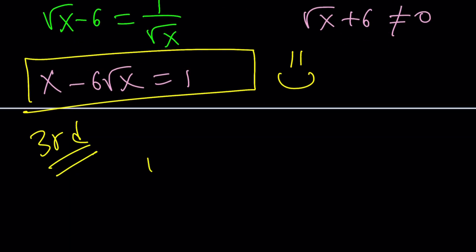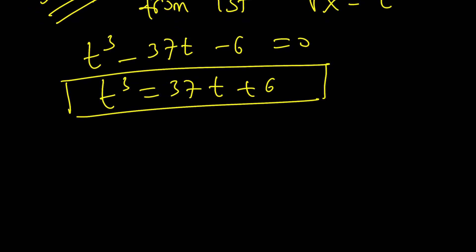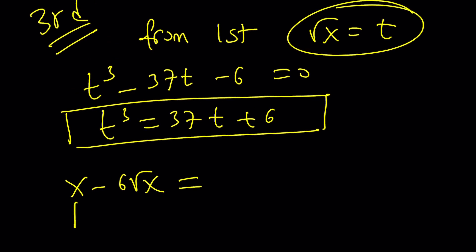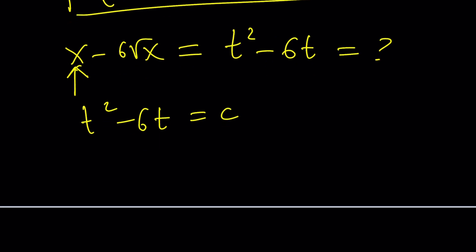Third method. So remember, from the first method, we got square root of x equals t, and that gave us t cubed minus 37t minus 6 equals 0. Now, here, I'm going to go ahead and isolate t cubed and write it as 37t plus 6, which is something that I'm going to use later. So let's save it. And now, remember, we're trying to evaluate x minus 6 root x. But remember, square root of x is t, and this is t squared. So we're basically trying to evaluate t squared minus 6t. What is that equal to? I don't know. Let's set it equal to c, which is supposed to be a constant.